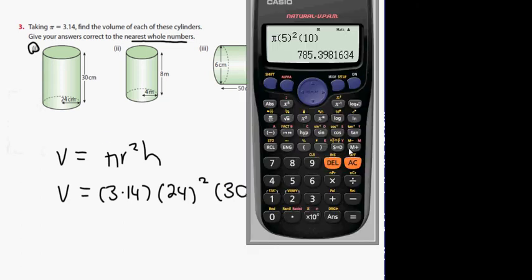Then you just put that into your calculator. You don't use the pi button this time though, because it specifically says 3.14. And then you go 24, and then the other one is going to be 30. Press the equals button, and then you get 54,259.2.